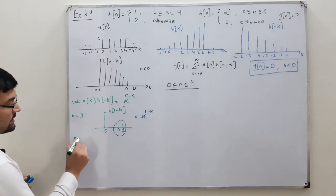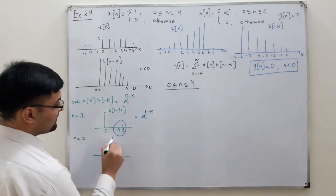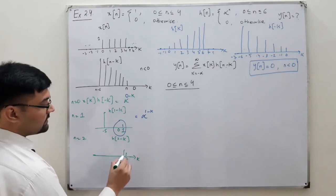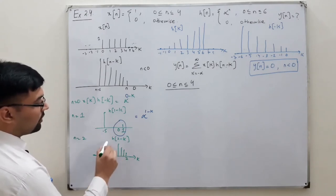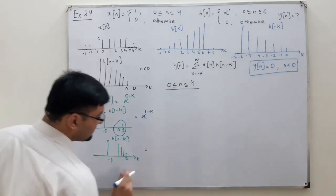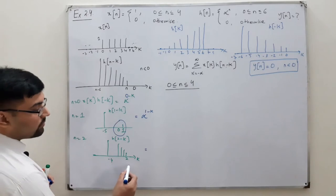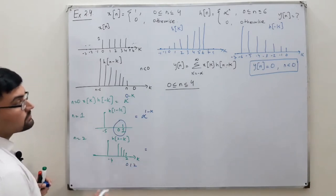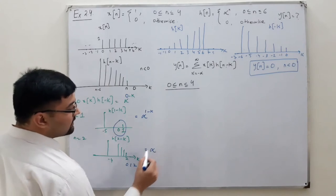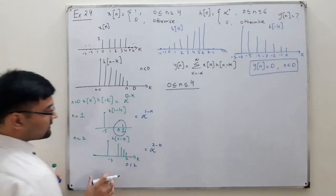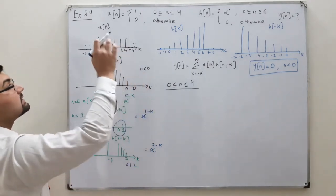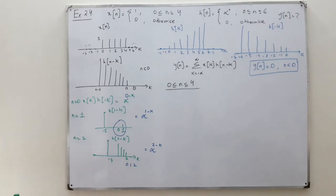For n = 2, you have h[2−k]. The minimum position is at k = 2 and the maximum position is at k = minus 4. The overlap occurs at k = 0, 1, and 2. The answer is alpha to the power 2 minus k, since h[2−k] = alpha^(2−k), multiplied by x[k] = 1.